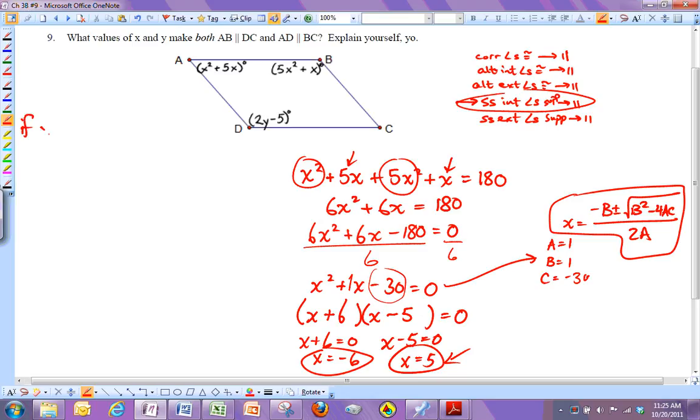So if x is 5, then I'm going to plug in 5 here, and I get 5 squared plus 25. So that's going to be 50 degrees. So this angle up here is 50 degrees. Now I need to figure out what y is somehow.